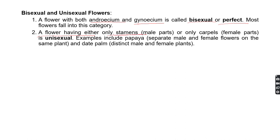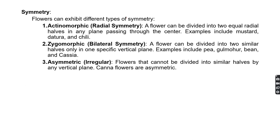In some plants, some flowers carry only stamens, the male part, and some flowers carry only the female part. Such flowers are called unisexual flowers. Examples include papaya and date palm. Common flowers such as hibiscus, marigold, and dahlia all come under bisexual flowers.